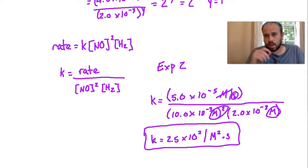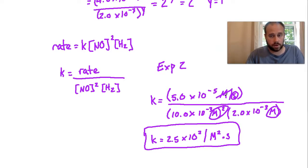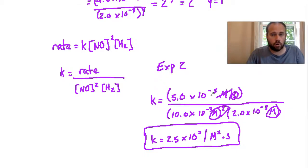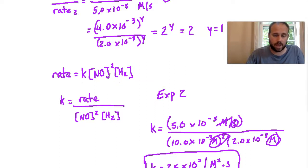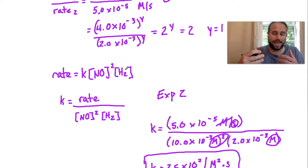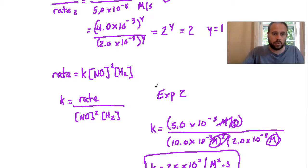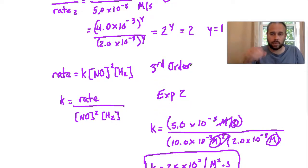The rate constant K can have different units depending on the overall reaction order. Here, NO is second order and H2 is first order. Adding the individual orders — 2 plus 1 — gives an overall third-order reaction. The unit on K is per molarity squared per second, consistent with third-order kinetics. The overall order is determined by summing all individual reactant orders.